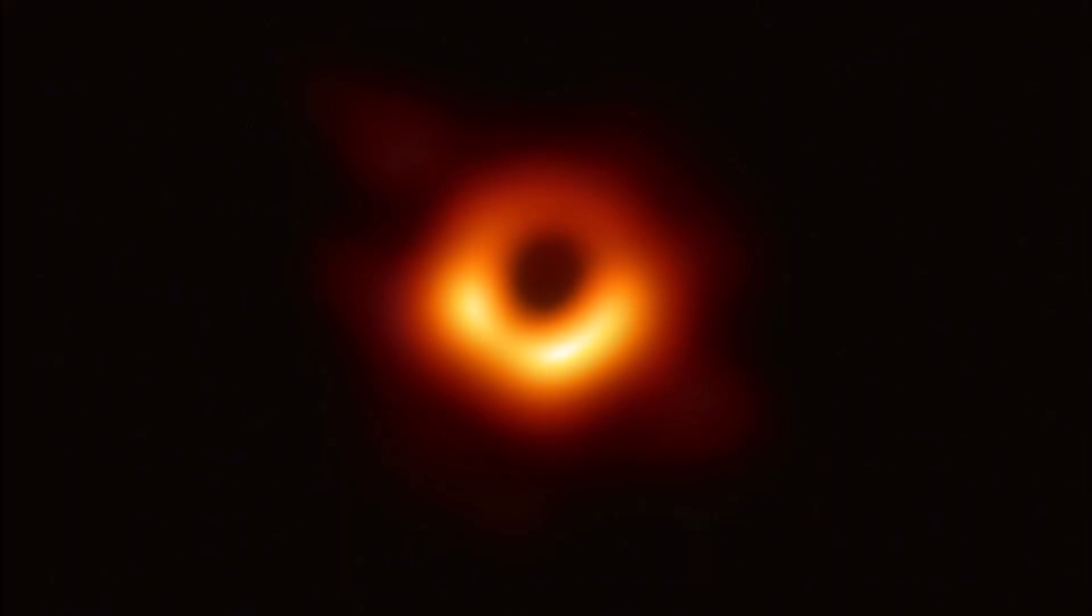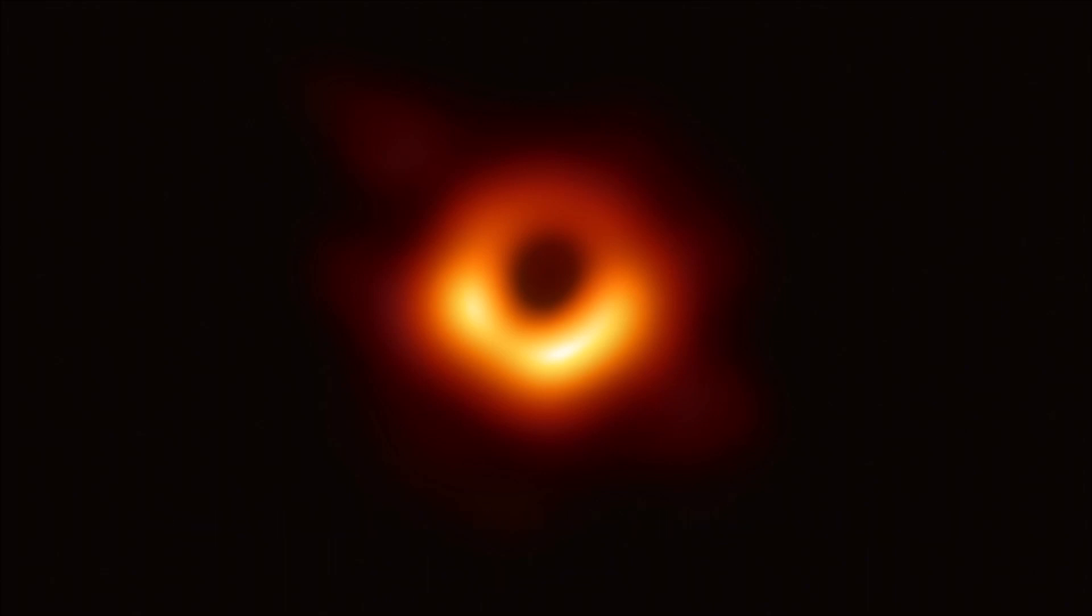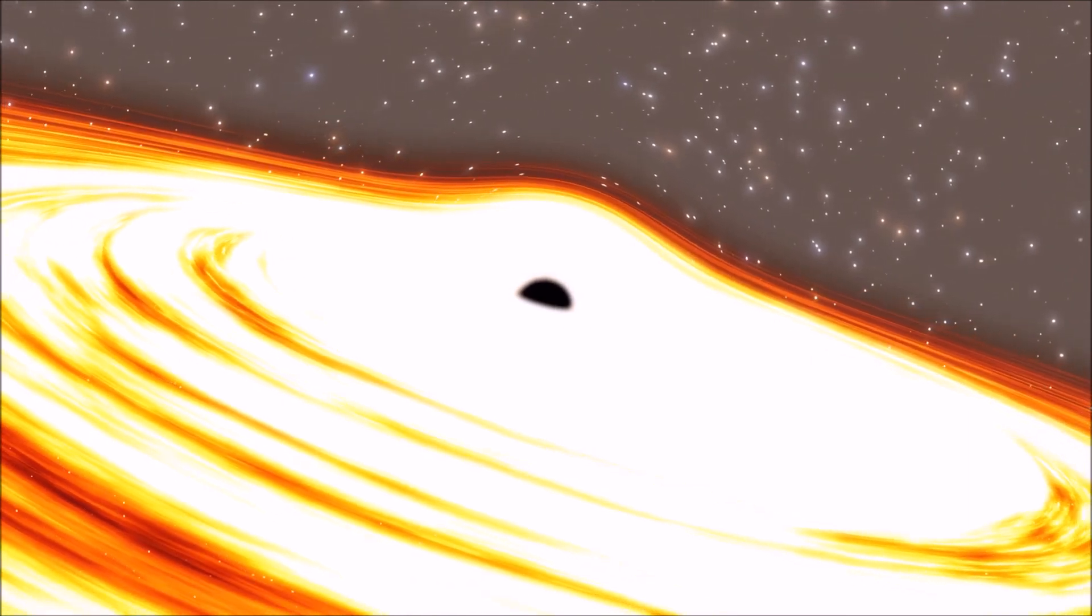Every galaxy has a supermassive black hole at its center, and the black hole of IC 1101 is one of the most massive black holes we know of in the entire universe. It is estimated to have the mass of around 100 billion suns.